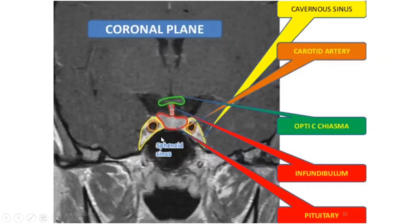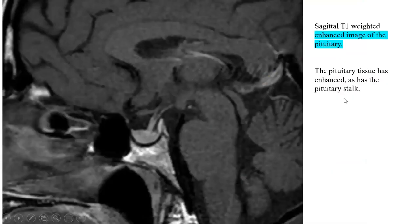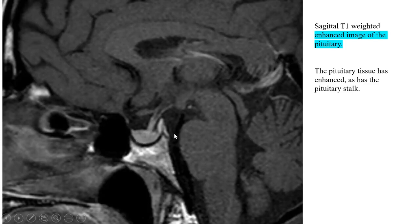Here I have marked the sphenoid sinus, the pituitary gland, the pituitary stalk — also referred to as the infundibulum — the optic chiasm on top, the carotid arteries, and the cavernous sinus on both sides. This is a coronal plane image. The next image is a sagittal T1-weighted enhanced image — after gadolinium — where you can clearly see the pituitary gland is fully enhanced, as well as the pituitary stalk. This is normal enhancement of the pituitary gland after contrast.